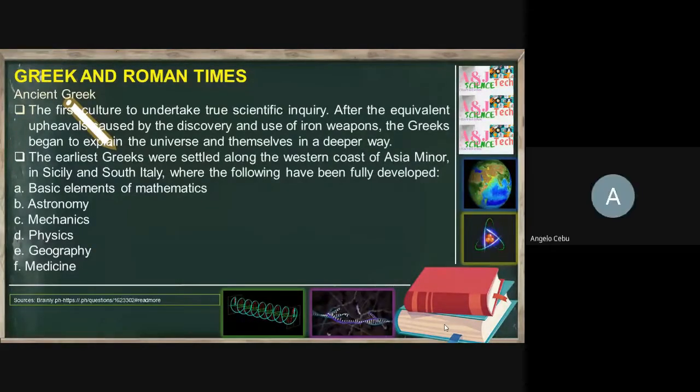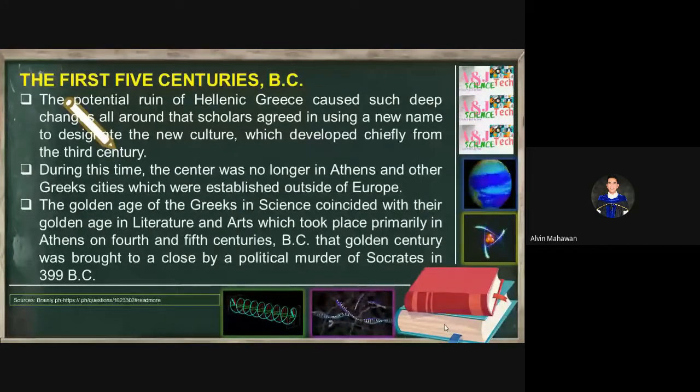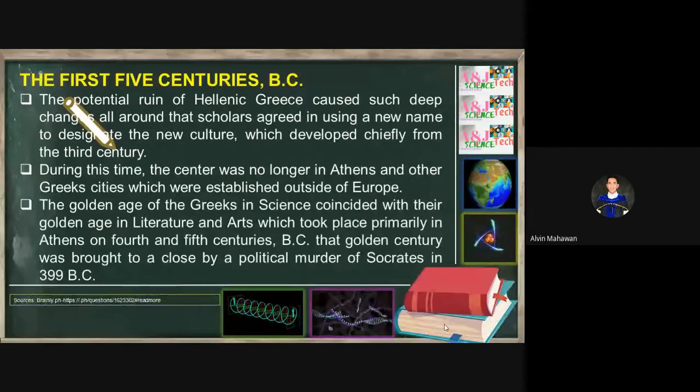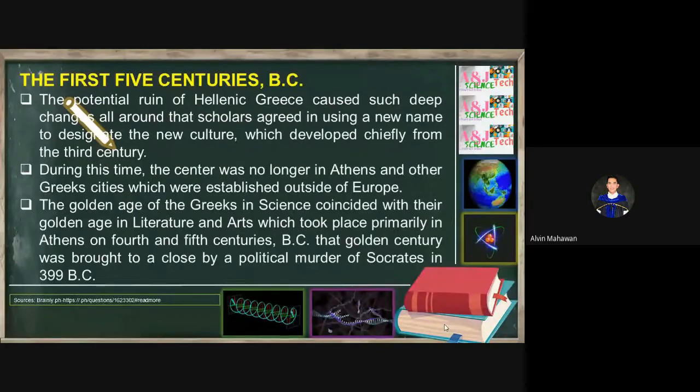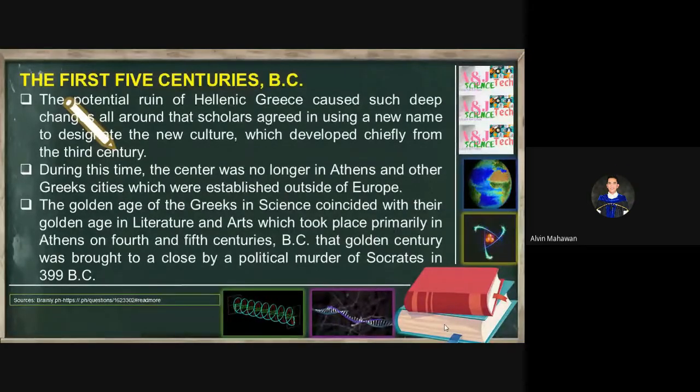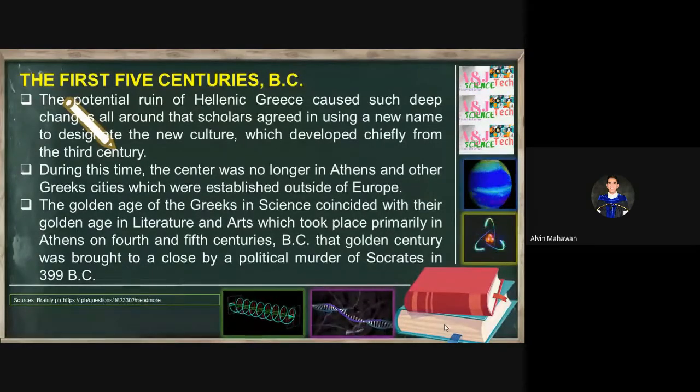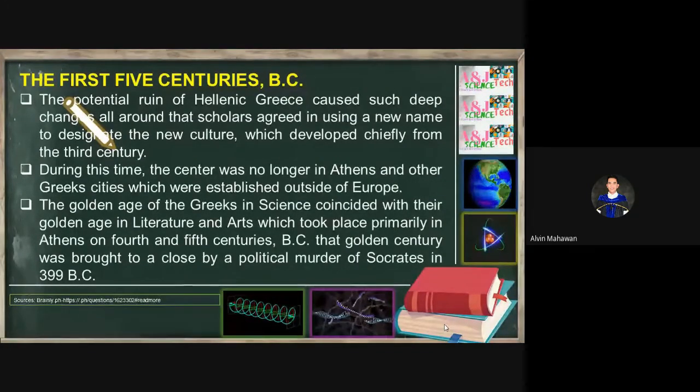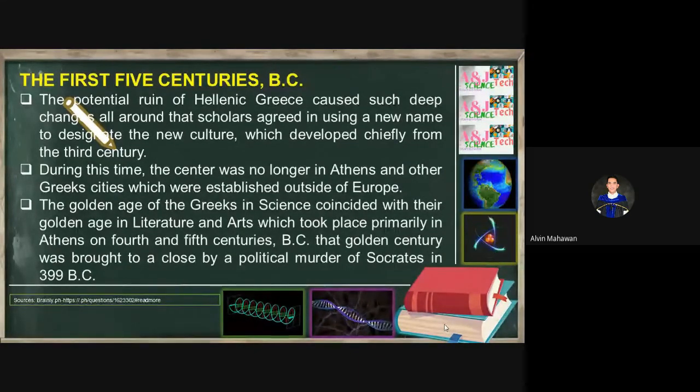Let's have the first five centuries. The potential ruin of Hellenic Greece caused such deep changes all around that scholars agreed in using a new name to designate the new culture which developed chiefly from the third century. During this time, the center was no longer in Athens and other Greek cities which were established outside Europe. The golden age of the Greeks in science coincided with their golden age in literature, which took place primarily in Athens in the fourth and fifth century B.C.